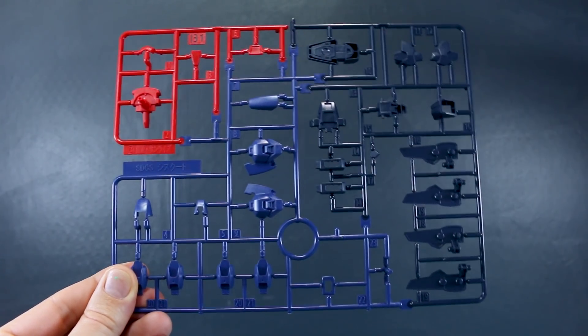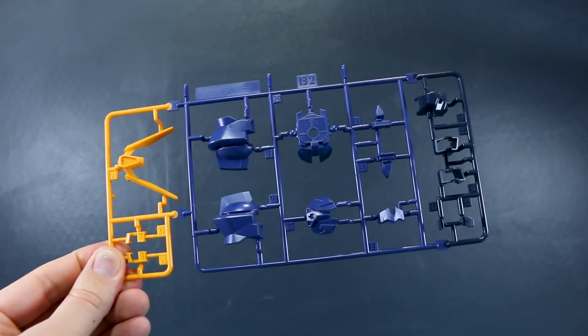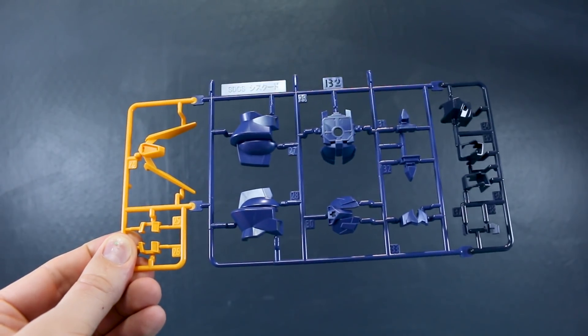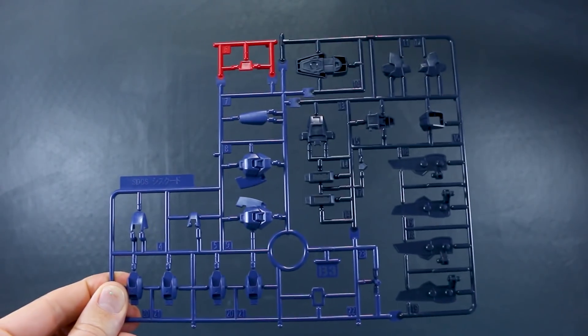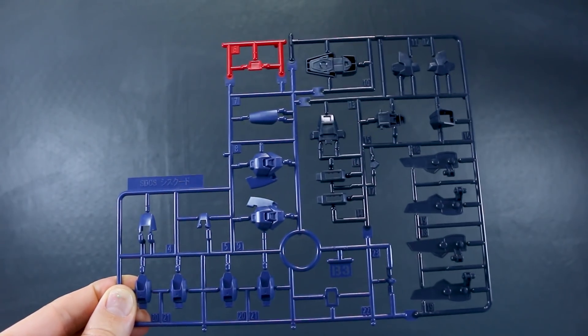And here is runner B1. We've got some red up there in the corner and then the two tones of blue, the darker blue and the lighter blue color here. And then runner B2 is also in three colors, the two-tone blue and then our yellow parts just for a couple of vents and the V-fin.